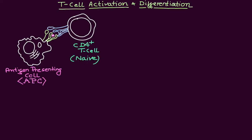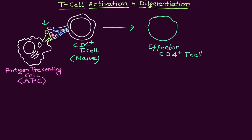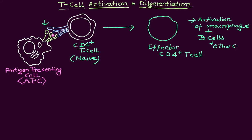A naive T cell means it has not been exposed to any antigenic molecule before. This interaction is going to cause clonal expansion. Because of that, the naive T cell is going to differentiate into effector T cells as well as memory T cells. Effector T cells will cause the activation of macrophages, B cells, and some other cells.